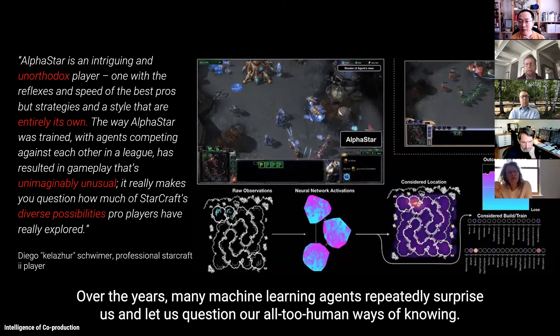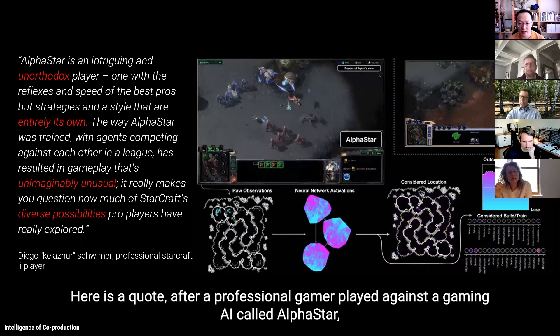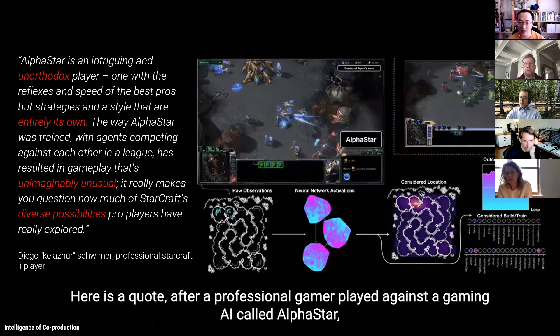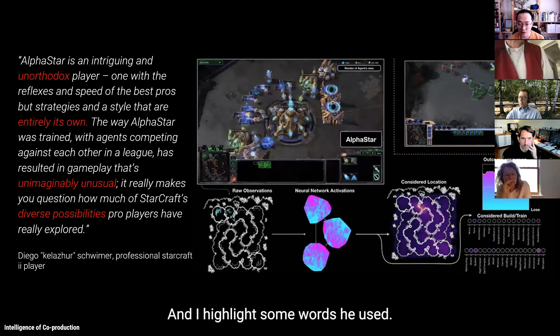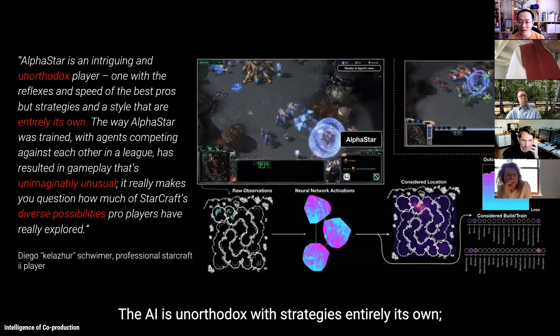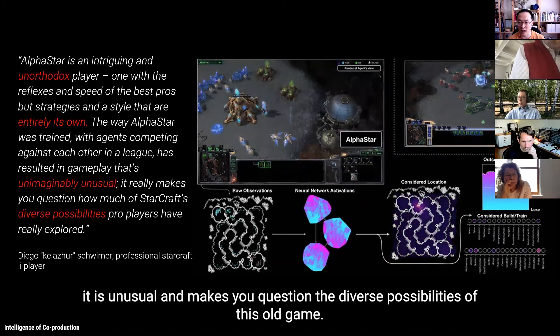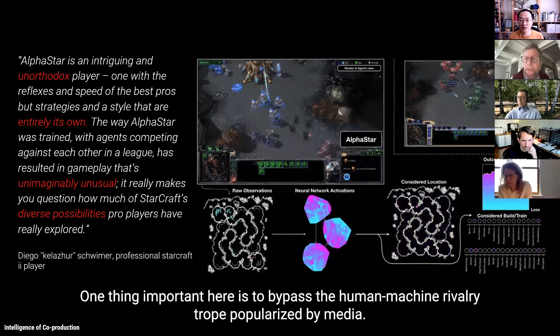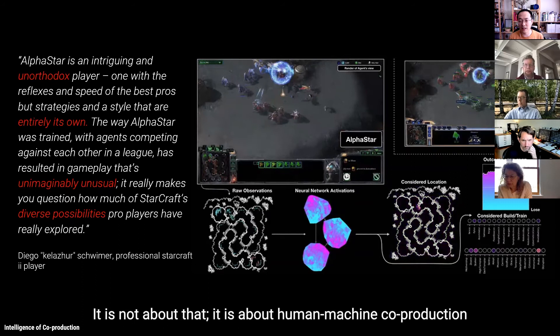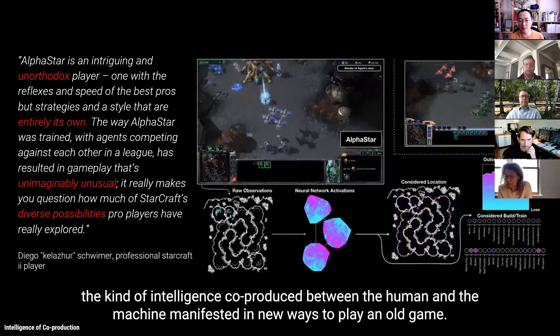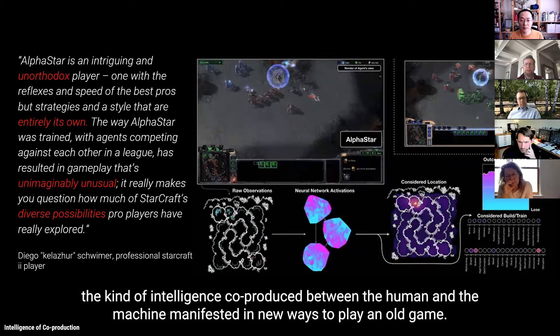And over the years, machine learning agents repeatedly surprise us and let us question all-too-human ways of knowing. And here is another quote after a professional gamer played against a gaming AI called AlphaStar, which is a cousin of AlphaGo. And I highlight some words he used here. And basically, he says, the AI is unorthodox with strategies entirely its own. It is unusual and makes you question the diverse possibilities of this old game. So one thing important here is to really bypass the human-machine rivalry trope popularized by media. It is not about that. It is about human-machine co-production, the kind of intelligence co-produced between the human and the machine manifested in new ways to play in an old game. It is about co-evolution in which diverse possibilities emerge when humans and machines explore something together. And this is why post-humanism and Triple O are so crucial for developing a framework in understanding intelligent machines as objects that are sometimes out of human control and access.